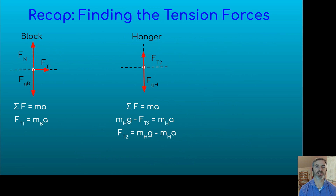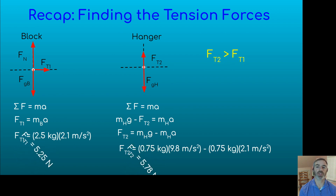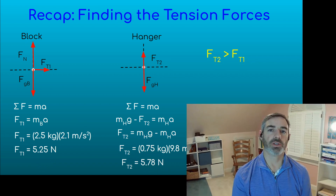To recap finding the tension forces: take the equations derived for the block and hanger in terms of Ft1 and Ft2, substitute mass and acceleration for Ft1, and substitute mass, g, and acceleration for Ft2. Comparing those values confirms that Ft2 is greater than Ft1. This has been an introduction to torque and Newton's second law using rotational inertia and angular acceleration. I hope this was helpful, and I hope you have a great day and an even better tomorrow.